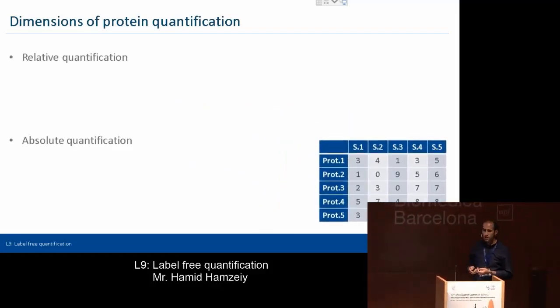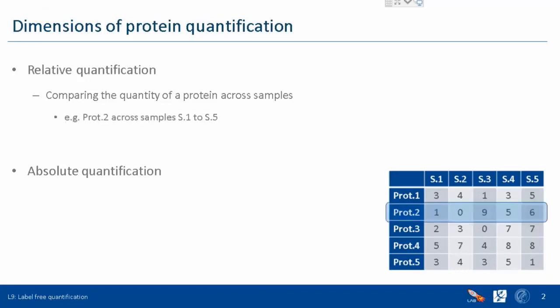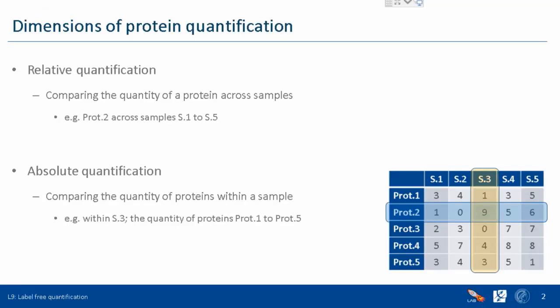We can do two types of quantification. One is called relative quantification and one is called absolute quantification. Relative quantification is basically quantifying proteins across samples — for example, quantifying protein 2 across five different samples S1 to S5. Absolute quantification is where we compare proteins within a sample, for example in sample three, trying to quantify proteins 1 to 5. MaxLFQ is for relative quantification within MaxQuant, and Proteomic Ruler is for absolute quantification within the Perseus software package.